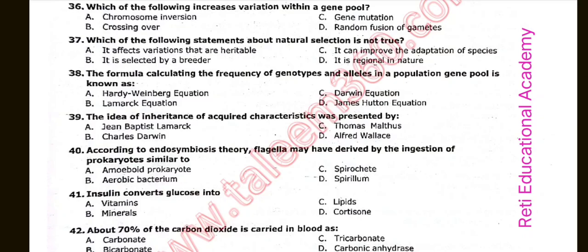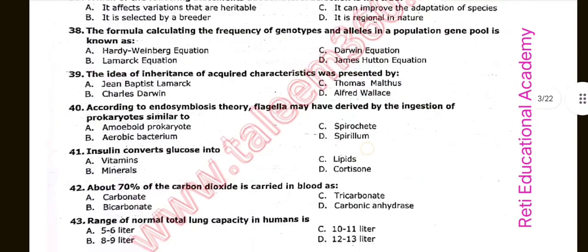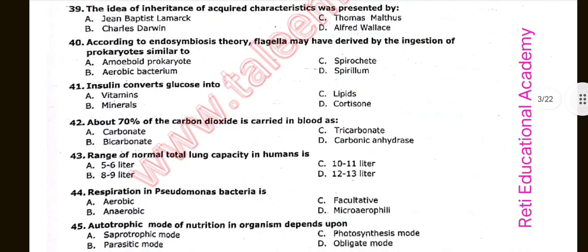Question number thirty-seven: Which of the following statements about natural selection is not true? The correct option is B: It is selected by a breeder. Question number thirty-eight: The formula for calculating the frequency of genotypes and alleles in a population gene pool is known as. The correct option is A: Hardy-Weinberg equation. Question number thirty-nine: The idea of inheritance of acquired characteristics was presented by A: Jean-Baptiste Lamarck.